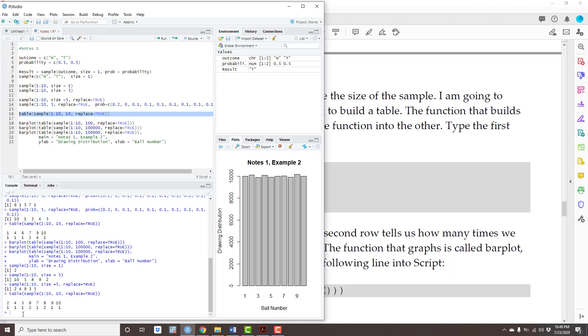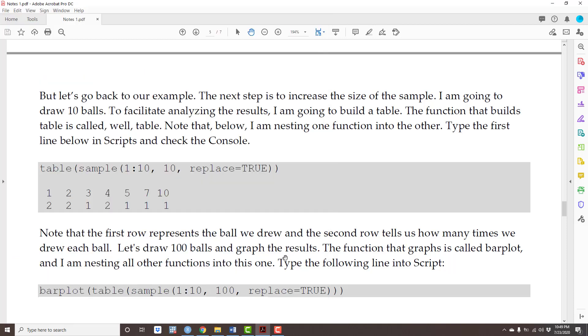So, the number 2 was drawn once. And the number 6, for instance, was drawn twice. Okay.